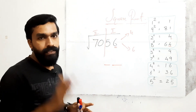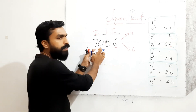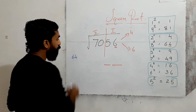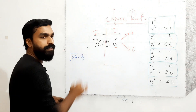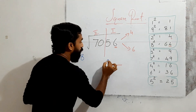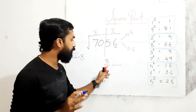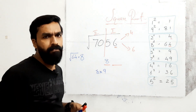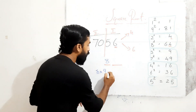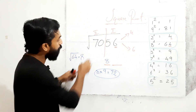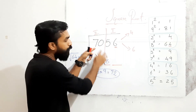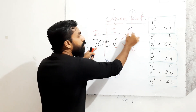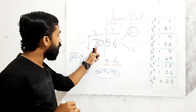Next, take the second group: 70. The nearest perfect square number below 70 is 64. The square root of 64 is 8. So the tens place of the answer is 8. Now multiply 8 by its successor 9: 8 × 9 = 72. Compare: 70 is smaller than 72, so take the smaller number from the options, which is 4.